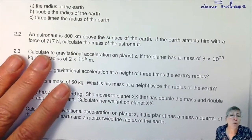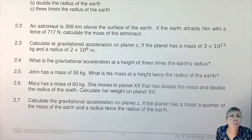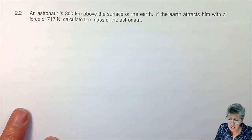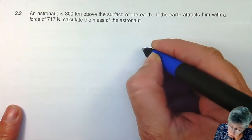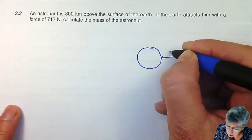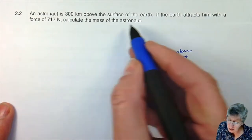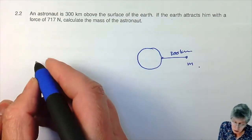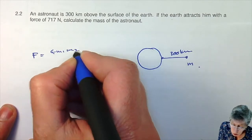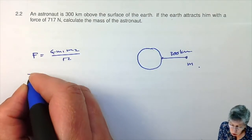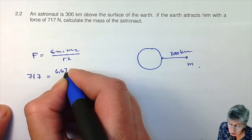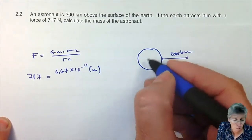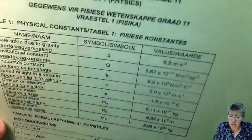Moving on to question 2.2. An astronaut is 300 kilometers above the surface of the earth, and the earth attracts him with a given force — calculate the mass of the astronaut. So: F equals G M1 M2 over R squared. We know the force is 171 N, G is 6.67 times 10 to the minus 11, the unknown is the astronaut's mass, and the other mass is the mass of the earth.